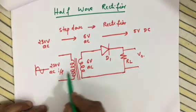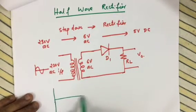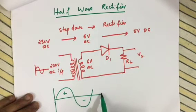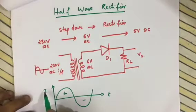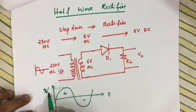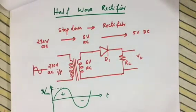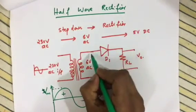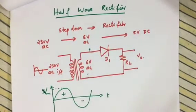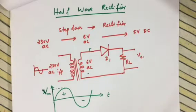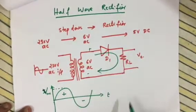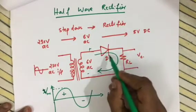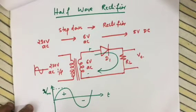Now let us see how the half wave rectifier works. During the positive half cycle, the diode is forward biased and it conducts, so current flows through the resistor. The output taken across the resistor is I into RL. So during the positive half cycle we get an output.